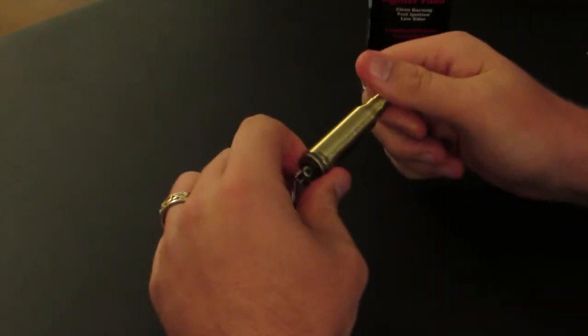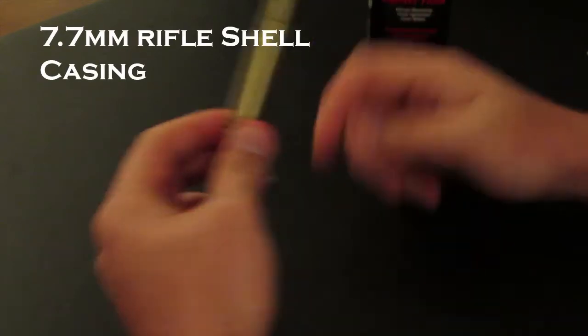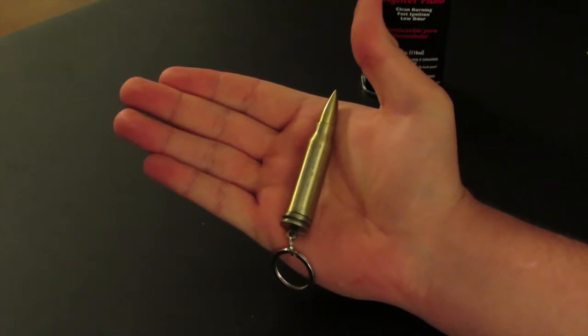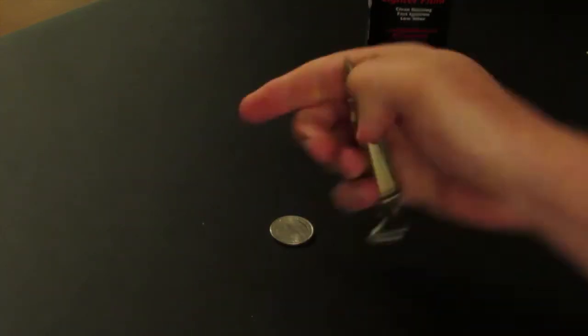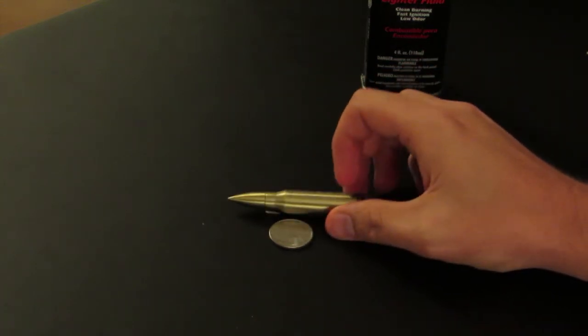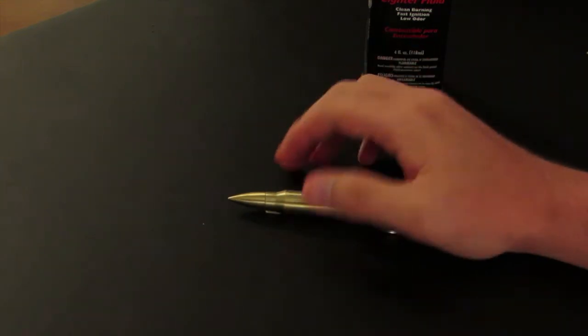So this is basically a rifle round. It's a 7.7 millimeter shell. You can tell just by the size of it how big it is. It's actually a pretty decent size. Here's another size comparison. There's a quarter. That's the size of the round.